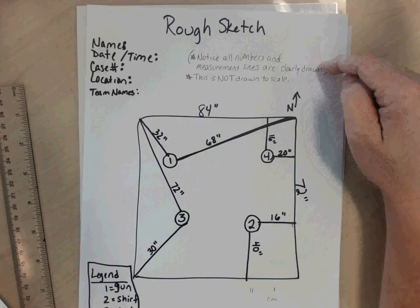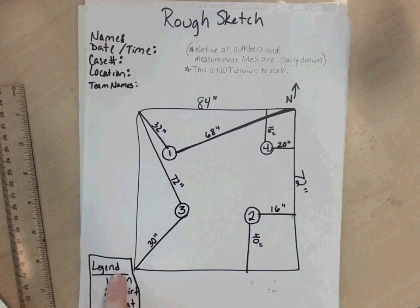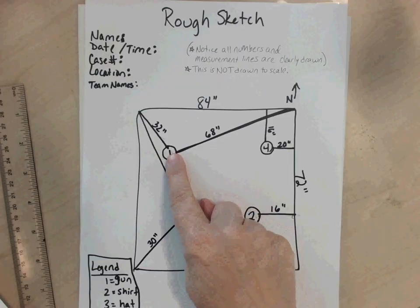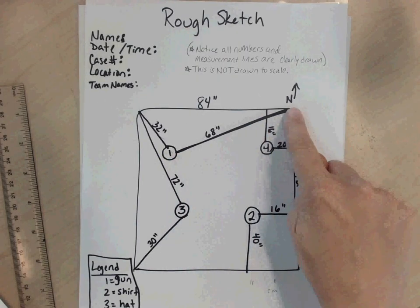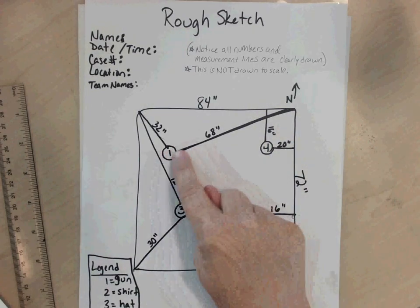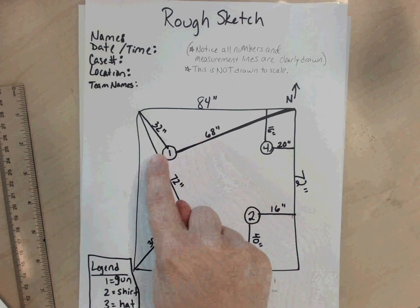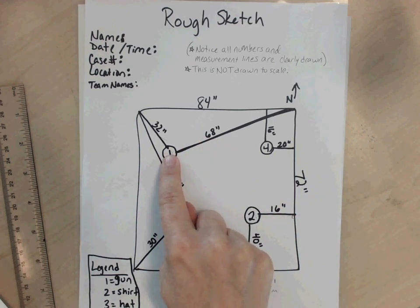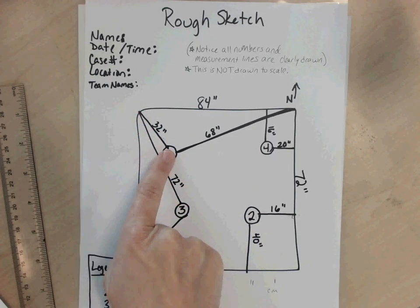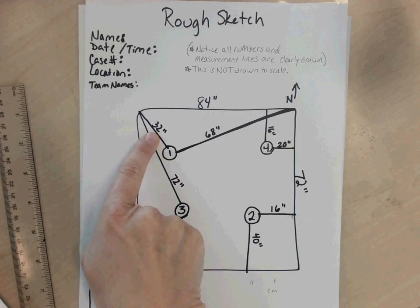Notice that all the numbers and measurement lines are clearly drawn. So for evidence number one, we have a legend down here. Evidence number one was the gun. We would have measured from the center of the evidence to a corner of the room. This is an immovable point. And then you have that line drawn showing that that's where the tape measure was used, and that was 68 inches. You'd have the center of the evidence to an adjacent corner, in this case the closest one. So you would measure that. You would draw the line indicating where you measured from and to, and then directly on the line you would put the measurement that it was. It's 32 inches.